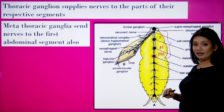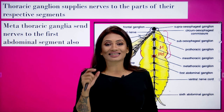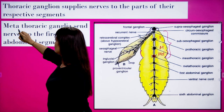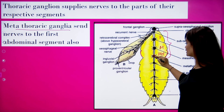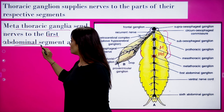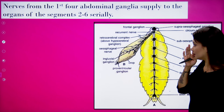The metathoracic ganglia are able to send nerves to the first abdominal segment also. So it is not confined and restricted to the thorax only — it goes into the first abdominal segment too.